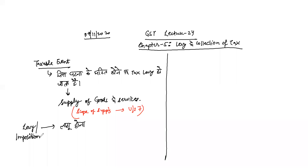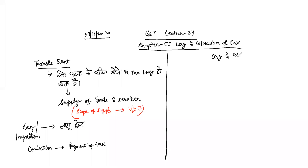Levy and Collection of Tax is divided into two parts: the first part is levy, and the second part is collection. Collection means tax is collected — when we talk about payment of tax, that is known as tax collection. In collection, you pay the tax.